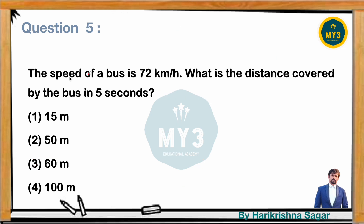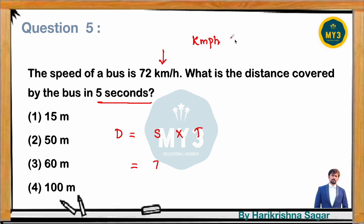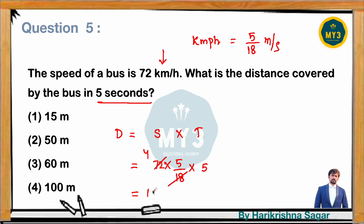If the speed of a bus is 72 km/hr, what is the distance covered in 5 seconds? Distance = speed × time. Convert 72 km/hr to m/s: 72 × 5/18 = 4 × 5 = 20 m/s. Time is 5 seconds. Distance = 20 × 5 = 100 meters. The answer is option 4.